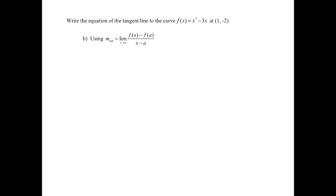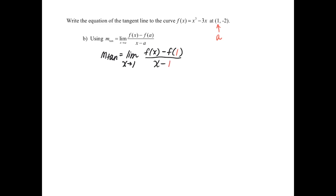Now let's write the equation of the tangent line using our second method. The slope of the tangent is the limit as x approaches a of [f(x) - f(a)] / (x - a). Again, the x value of your point is your a value, so a = 1. The slope equals the limit as x approaches 1 of [f(x) - f(1)] / (x - 1).